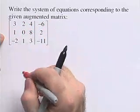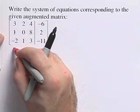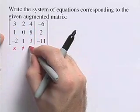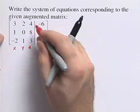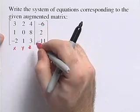We have three columns here, so we have three variables in our equation, and we could call them x, y, and z. We're going to let this represent our right-hand side. This vertical line represents the equal signs in our equations.